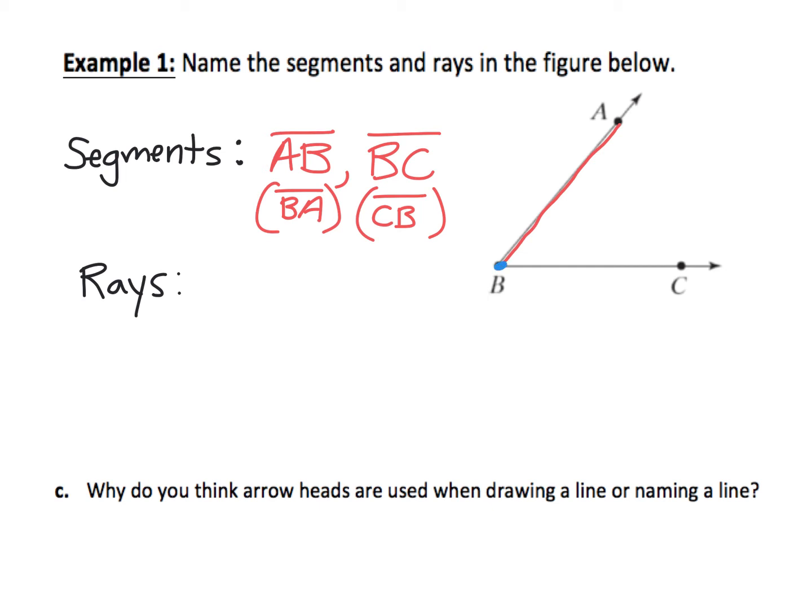So let's start at point B. One ray would be starting at B, going toward A. So we call that ray BA. Remember, the endpoint is always listed first, and it extends infinitely toward the A. The second ray would be to start at B and extend toward point C. That would be ray BC.